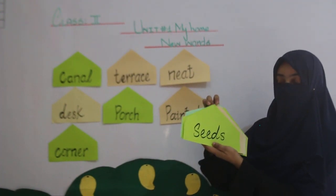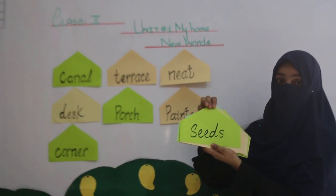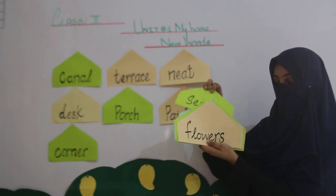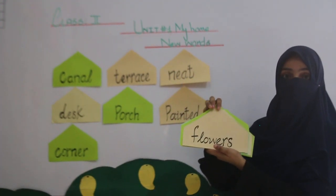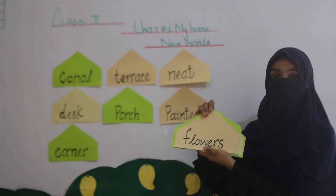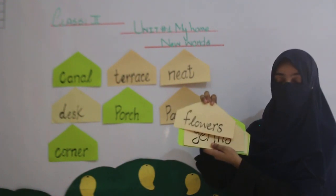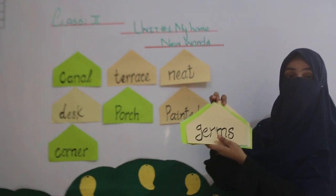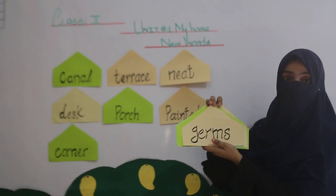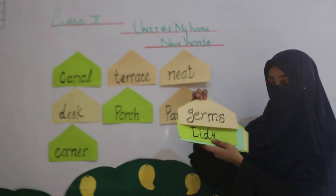S-E-E-D-S, Seeds, beej. F-L-O-W-E-R-S, Flowers, phool. Germs — Jerasim.